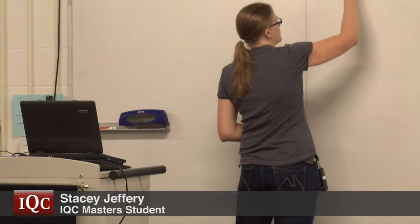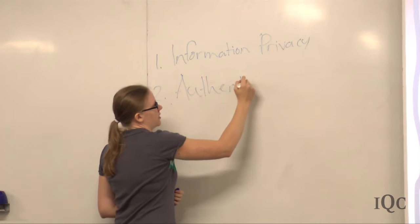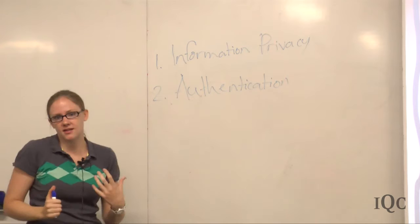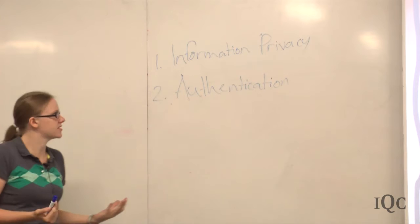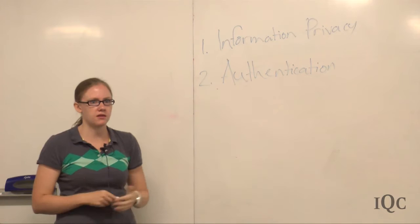Cryptography is composed of two main goals: information privacy and authentication. You might want to verify the identity of someone sending the message, and that also goes along with making sure the message hasn't been tampered with. Basically, keeping information private, and also knowing that a message really came from the person you think it came from.